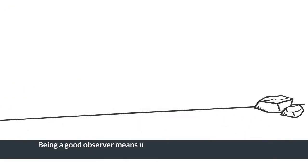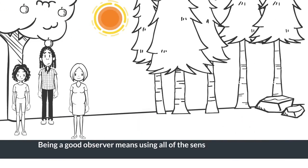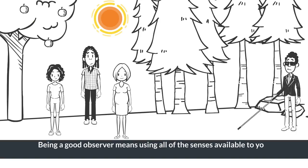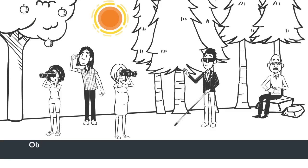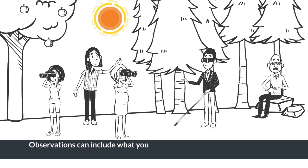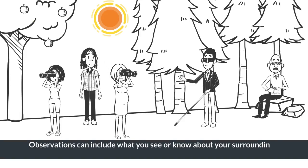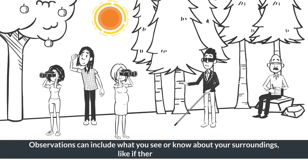Being a good observer means using all of the senses available to you, which might be different for everyone. Observations can include what you see or know about your surroundings, like if there are trees.